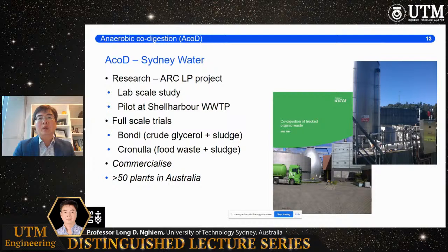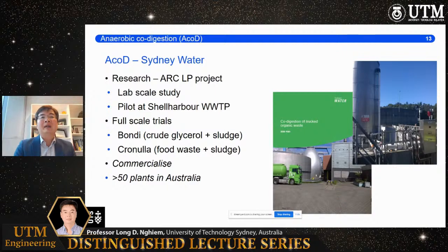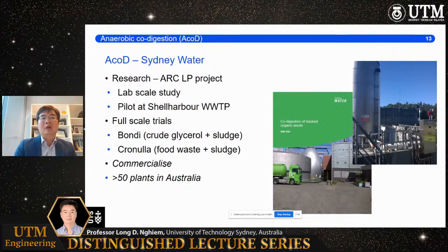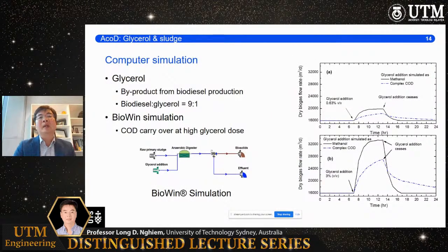We paired up with Sydney Water looking at anaerobic co-digestion to generate more energy, potentially become energy neutral, and mitigate fugitive greenhouse emissions. We started with lab-scale study, computer simulation, pilot, and then full-scale implementation at two treatment plants. The first project looked at co-digestion of glycerol and sludge. Glycerol is a byproduct from biodiesel production — for every nine liters of biodiesel produced, we end up with one liter of glycerol. It is very high in carbon, very low quality — not pure glycerol, so it cannot be used for high-end applications like the cosmetic industry. It comes to us at virtually zero cost.